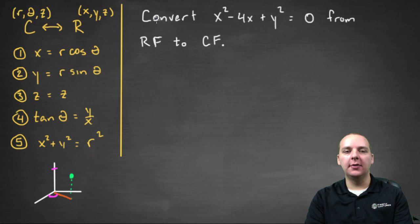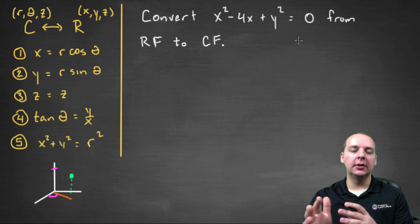In this exercise we're being asked to convert the equation x squared minus 4x plus y squared equals zero from rectangular form to cylindrical form.